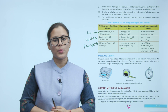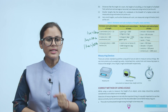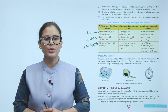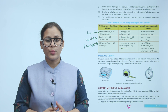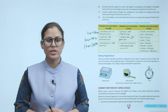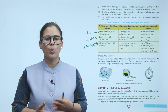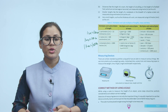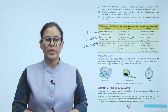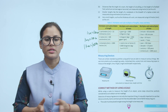Measuring devices: There are certain standard instruments using which we are able to measure various things. We use instruments such as weighing scales, clocks, watches, rulers, and measuring tapes to measure weight, time, height, length, and breadth respectively.